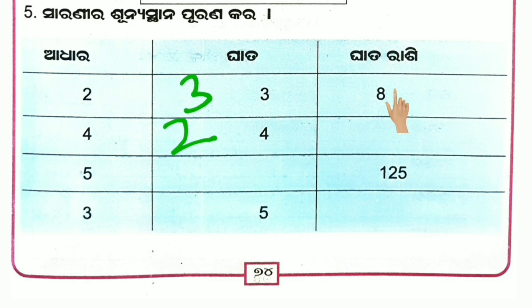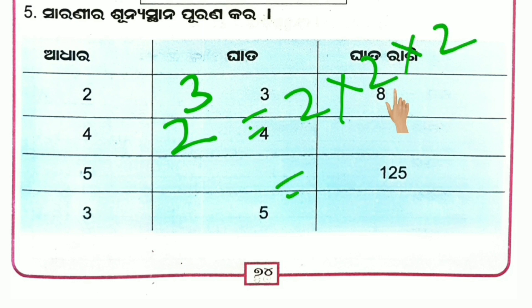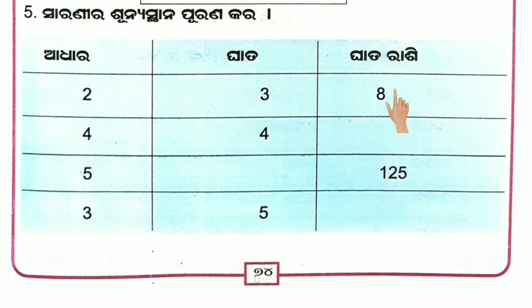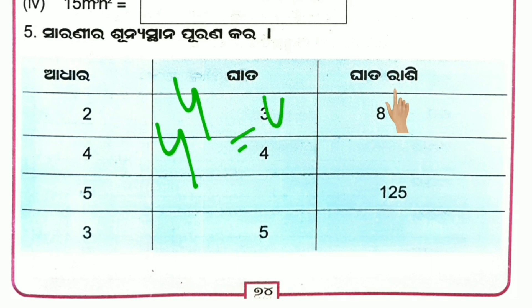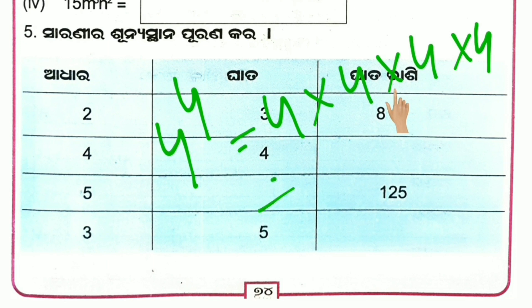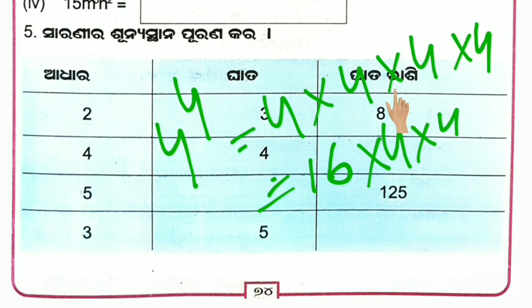y to the power 3. y to the power 5 — this is the 4th number. y to the power 6 — it is the 4th number, 3rd number, 2nd number.